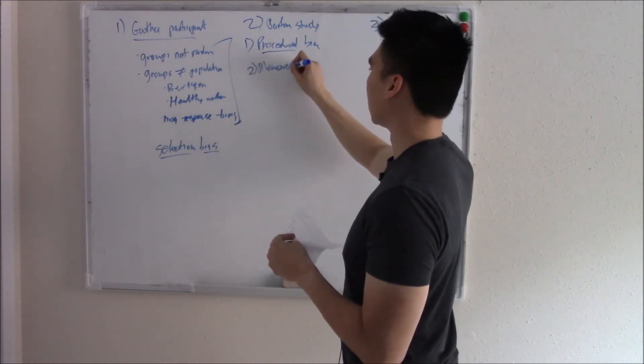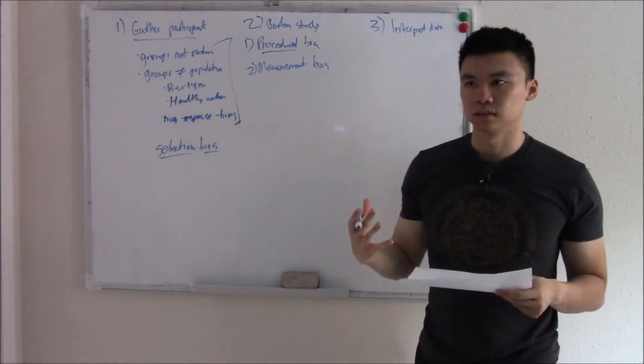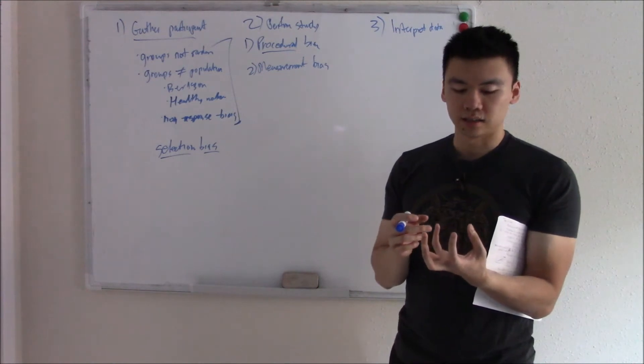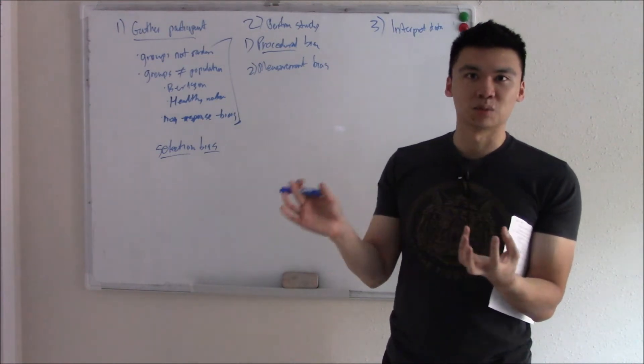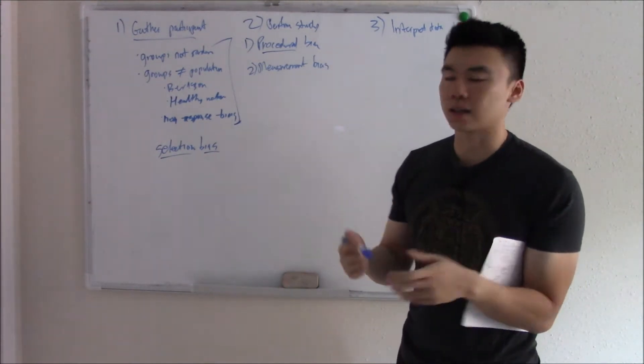You can have measurement bias. Again, the name gives it away. Here you're not measuring the data correctly or you're measuring it poorly. Maybe the machine you're using is broken and it generates a number that doesn't really correlate to anything. That's measurement bias. You're measuring things poorly, incorrectly.